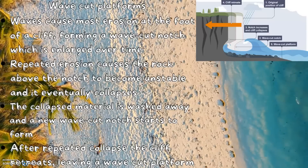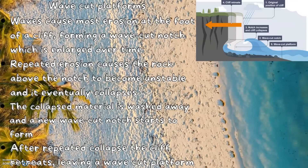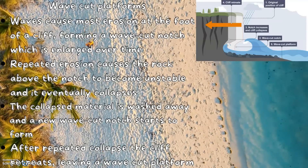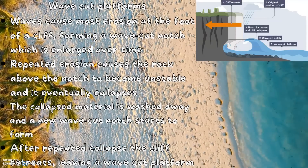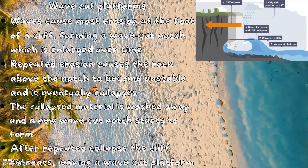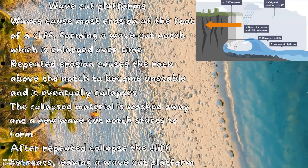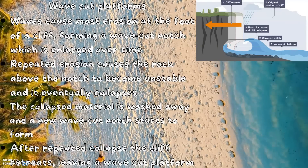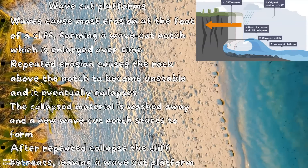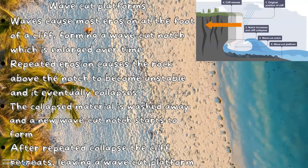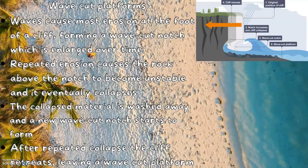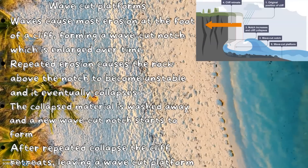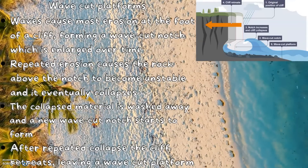Repeated erosion causes the rock above the notch to become unstable, and when it can't defy gravity any longer, it eventually collapses. The collapsed material is washed away, and a new wave cut notch starts to form.